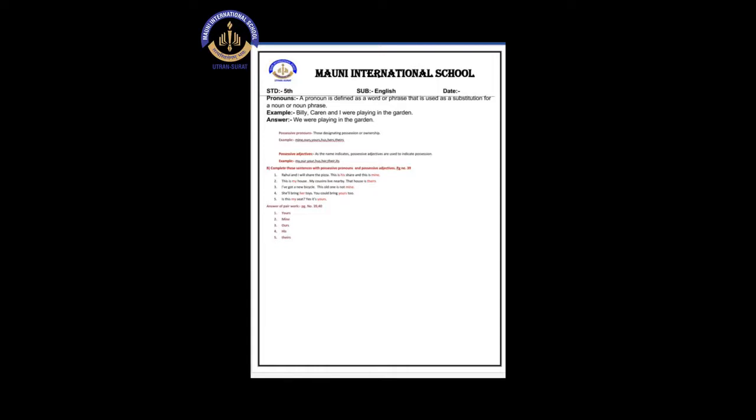Let us see an example to clear your doubts. The sentence is: 'Billy, Karen and I were playing in the garden.' Now, how will we convert this? Instead of taking the names Billy, Karen and I, we have to use 'we'.